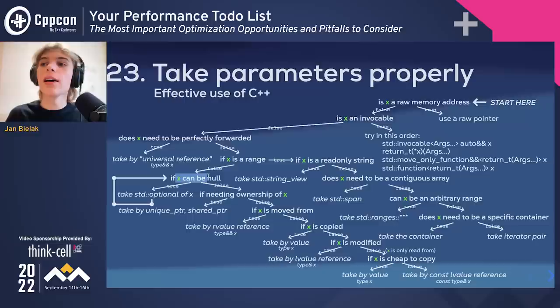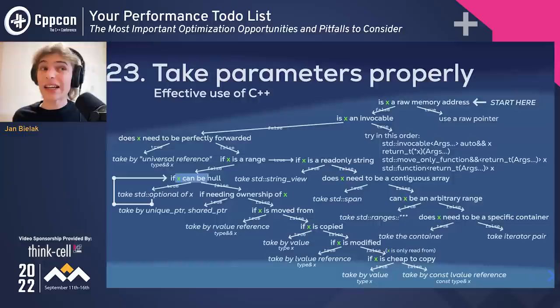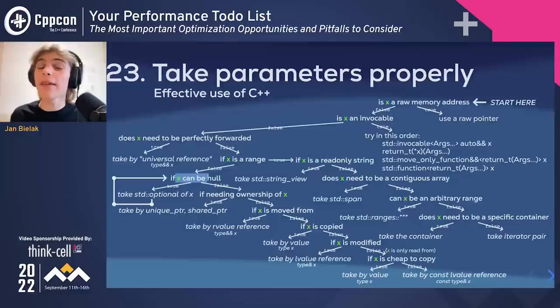Question: What if x can be null but the original x, if present, doesn't live in an optional and is expensive to copy — is there something like a non-owning optional view? As far as I know, there isn't such a thing in the standard library. But you could use std::optional<std::reference_wrapper<T>> — in that case, you don't copy x. I think that could solve this issue.